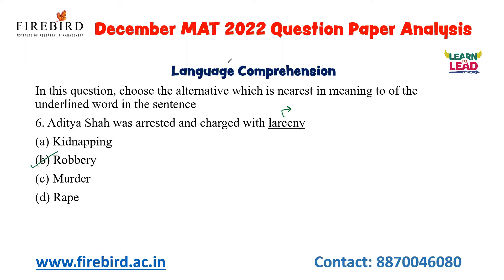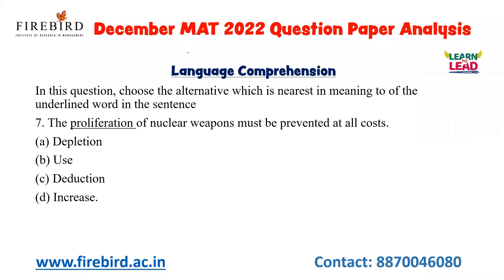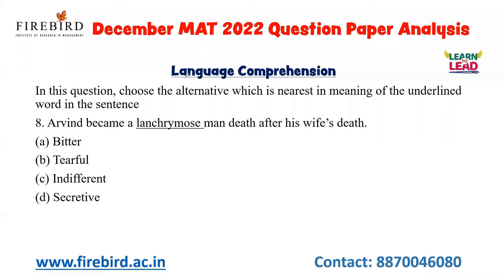Next: 'The proliferation of nuclear weapons must be prevented at all costs.' Proliferation means a rapid increase, so the best answer is increase. Finally: 'Arvin became lachrymose after his wife's death' — lachrymose means tearful, so the answer is tearful.